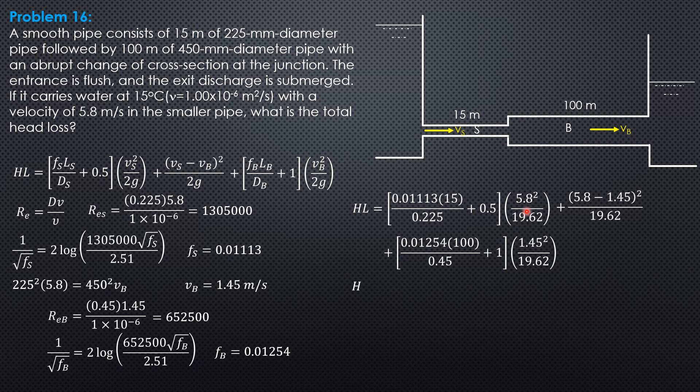So this term is 2.130, this is 0.9644, and this last term here is 0.4058. Combining, total head loss is 3.500 meters. So that's it.